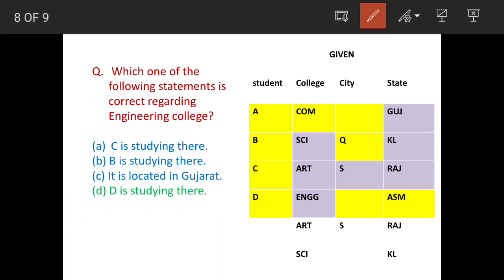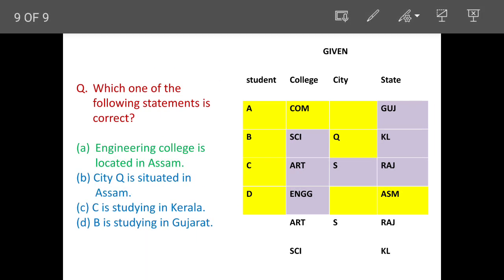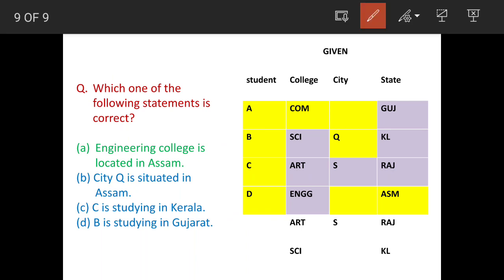Which statement is correct with regard to engineering college? C is studying there — no, C is in arts. B is in science. It is located in Gujarat — no, commerce is in Gujarat. D is studying there — yes, that is correct and is the answer. Engineering college is in Assam — as per the table, this is also confirmed correct, so the conclusion is option A.